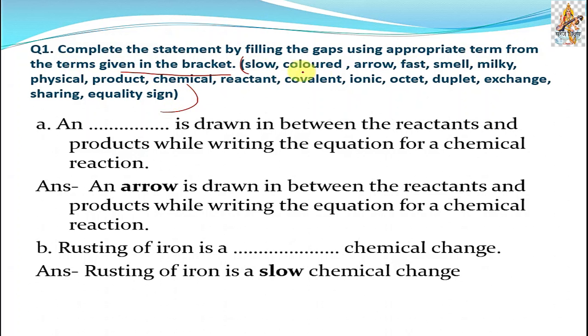Part a: An arrow is drawn in between reactants and products while writing the equation for a chemical reaction. Answer is arrow is drawn between reactants and products while writing the equation for chemical reaction. So in between arrow for reaction, here is input, here is output.